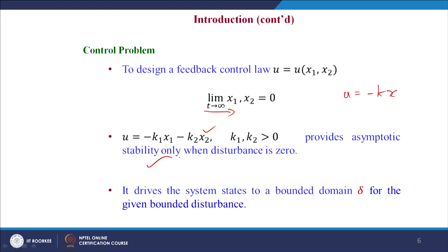But if we consider the disturbance existing in the system, then this state feedback control law will drive the system states to a bounded domain δ, which is a function of k₁, k₂, and the disturbance bound L. Thus it will not bring the states to convergence; it brings them only to that domain. It would not converge to 0 or the equilibrium point provided the system disturbance is not equal to 0.